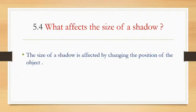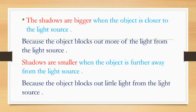If you want a bigger shadow or a smaller shadow, you have to change the position of the puppet — the position of the object — and you will get a different size of shadow. Shadows are bigger when the object is closer to the light source.